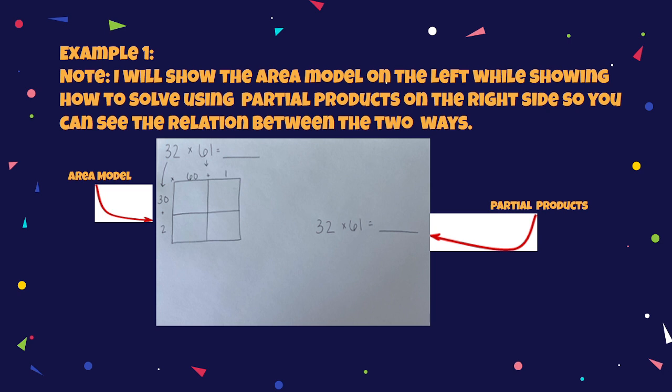Note, I will show the area model on the left while showing how to solve using partial products on the right side, so you can see the relation between the two ways. So as you can see, we have an area model for 32 times 61. And remember how to use the area model. We divide the area model into four parts according to the amount of digits that you have. So the digits are decomposed by its place value.